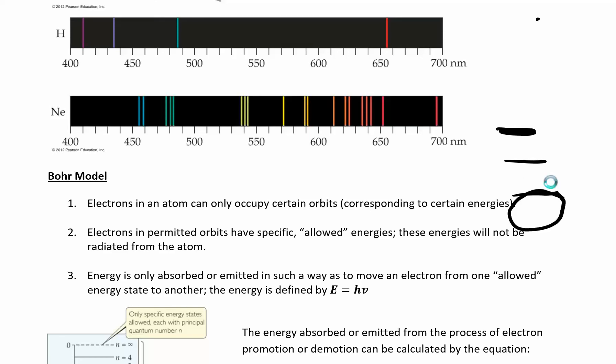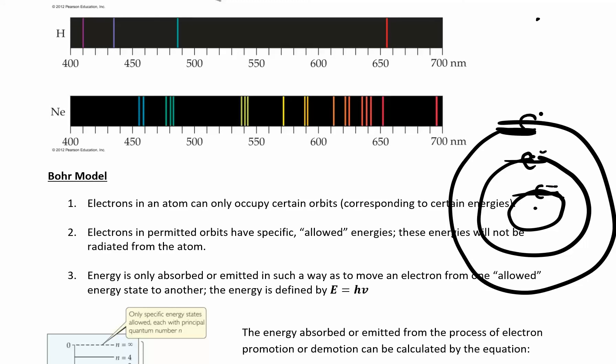And he kind of said, well, then an element, an atom is the same way. So here's your nucleus and then an electron can be here, or it can be here, or it could be here.